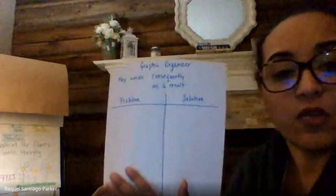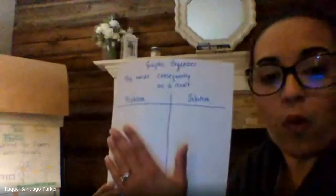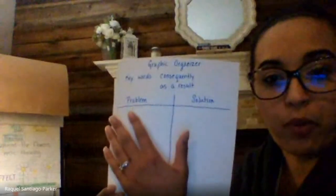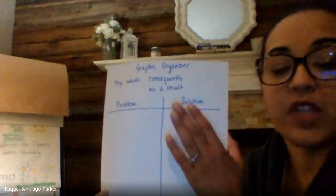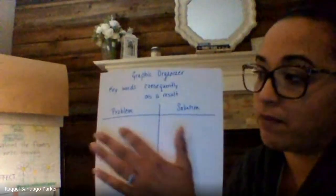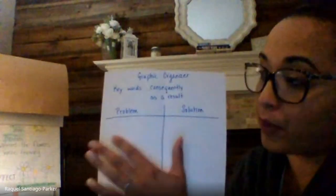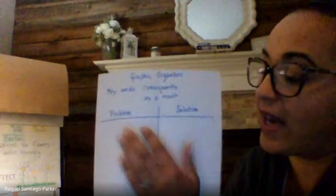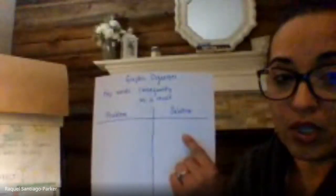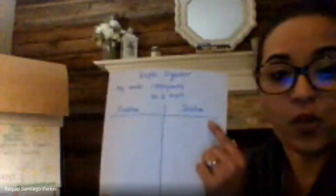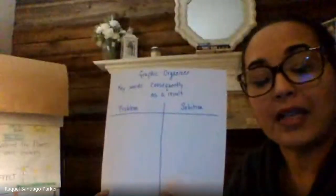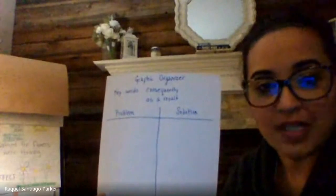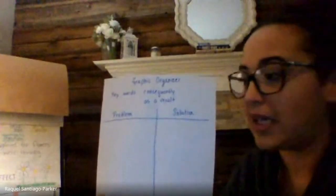As you read, you can also create your own graphic organizer using a T-chart. On one side, write the word 'problem,' and on the other side, 'solution.' List one problem that you come up with, and then on the opposite side, write the solution from the text. You may also want to indicate the page number so you can cite your details from the text appropriately.